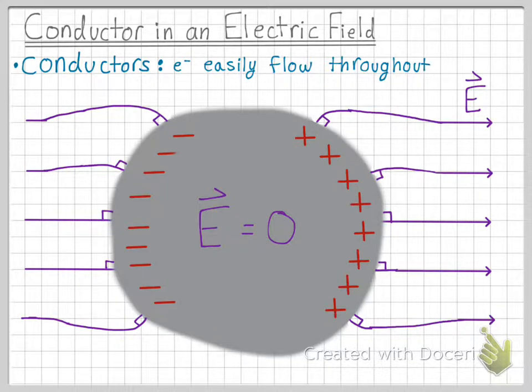This is because if there was any electric field that was not perpendicular or it would have a parallel component, it would cause the charges on the surface of the conductor to accelerate, and the conductor would no longer be in equilibrium.